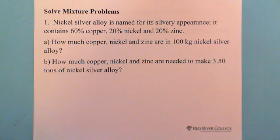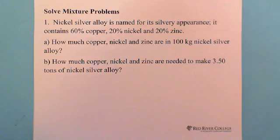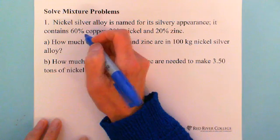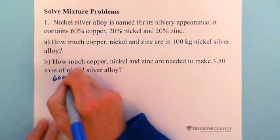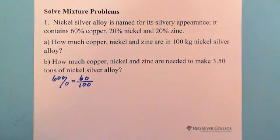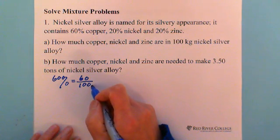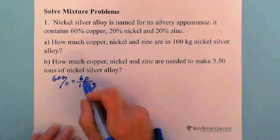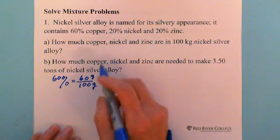This question helps us understand what that percentage means. As we know, in the alloy there are 60% copper. The 60% means 60 over 100. So that means if there are 100 grams of nickel silver alloy, there are 60 grams of copper.